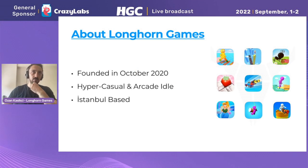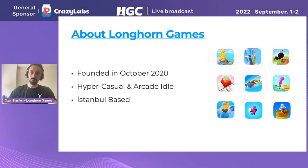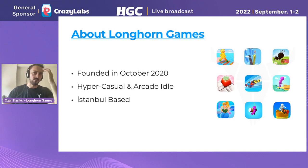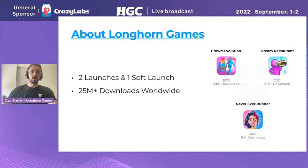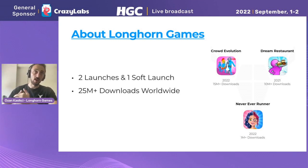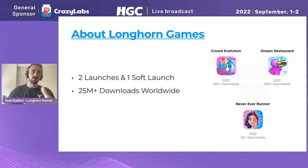A little bit about Longhorn Games: we were founded in October 2020 with two co-founders, and we mostly build hyper casual and arcade games. We're Istanbul-based, in Turkey. We've developed around 200 hyper casual prototypes by now and keep building new ones. We have two launches, one soft launch, and more than 25 million downloads worldwide. Our latest hit is Crowd Evolution, which is also hyper casual, and I'll give some examples about the game in this presentation.